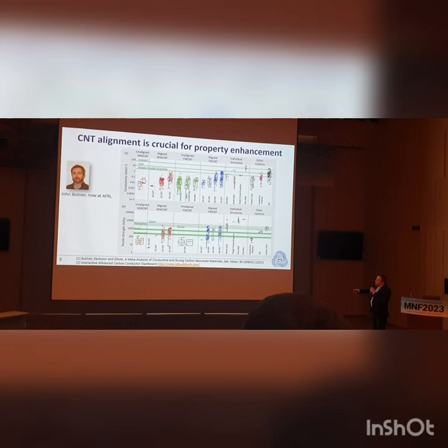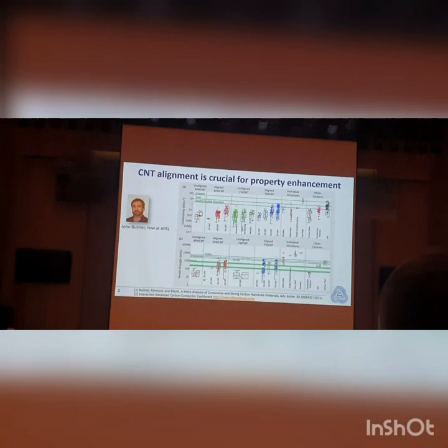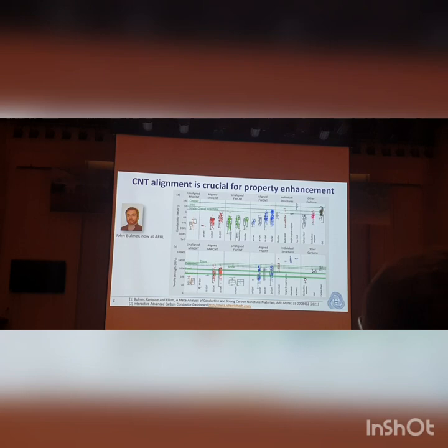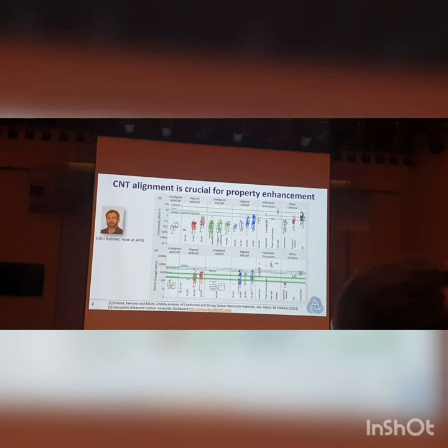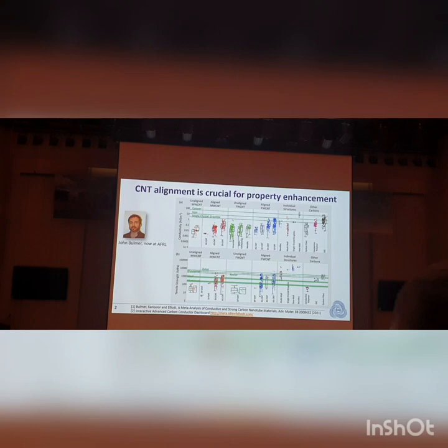There's a lot of variation between different types of materials synthesized in different labs, but the take-home message is that alignment helps in all cases to boost strength and conductivity. We have benchmark green lines — for electrical conductivity, copper is tantalizingly out of reach, but hitting that benchmark would represent a major advance. In mechanical properties we're already rivaling or exceeding the best synthetic polymer fibers.